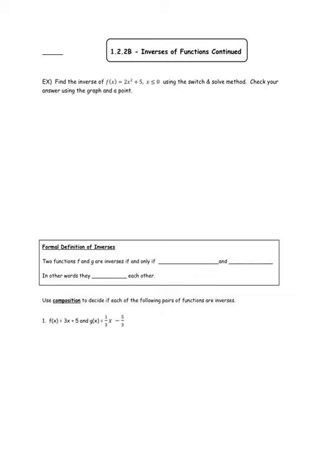Hi everyone, this is Mrs. Campbell speaking and welcome to lesson 1.2.2b: Inverses of Functions Continued. We're going to begin today with another example of finding an inverse, reviewing what we learned in our previous lesson. We're going to add a few more things today and finish up this topic. The first example says: find the inverse of f(x) = 2x² + 5 for x ≤ 0 using the switch and solve method, check your answer using the graph and a point.